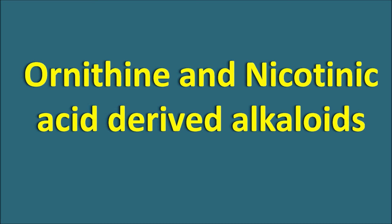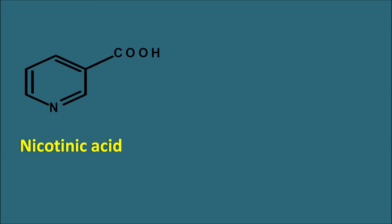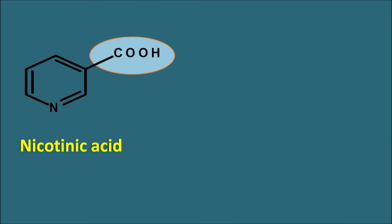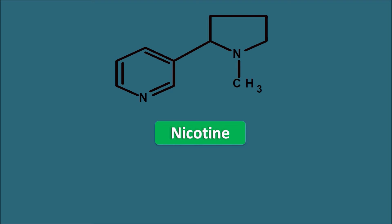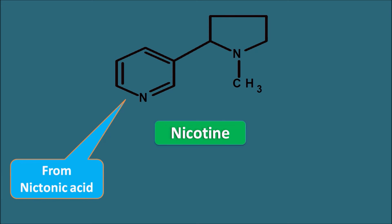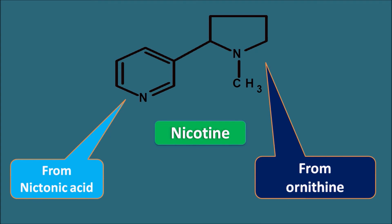In some plants, both ornithine and nicotinic acid act as precursors. Nicotinic acid (nicotine-3-carboxylic acid) loses its carboxylic acid group to produce the pyridine nucleus; if pyridine is completely saturated, it becomes piperidine. Nicotine contains a pyridine ring system derived from nicotinic acid and a five-membered pyrrolidine ring system derived from ornithine. Nicotine acts as a CNS stimulant and is an agonist on nicotinic acetylcholine receptors.